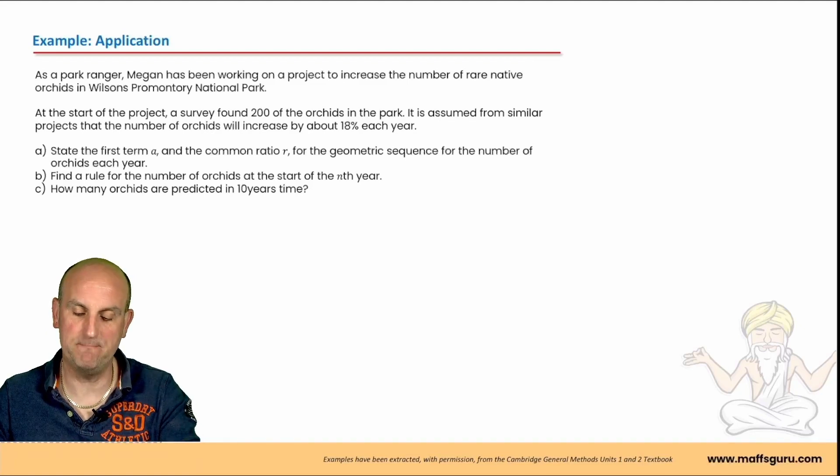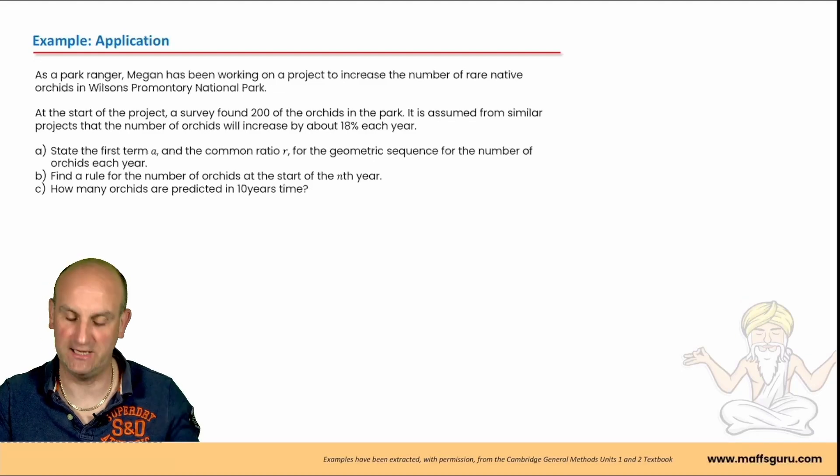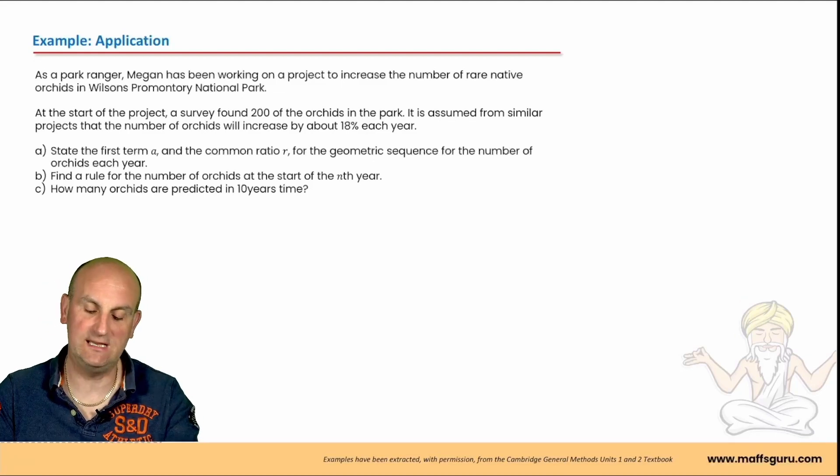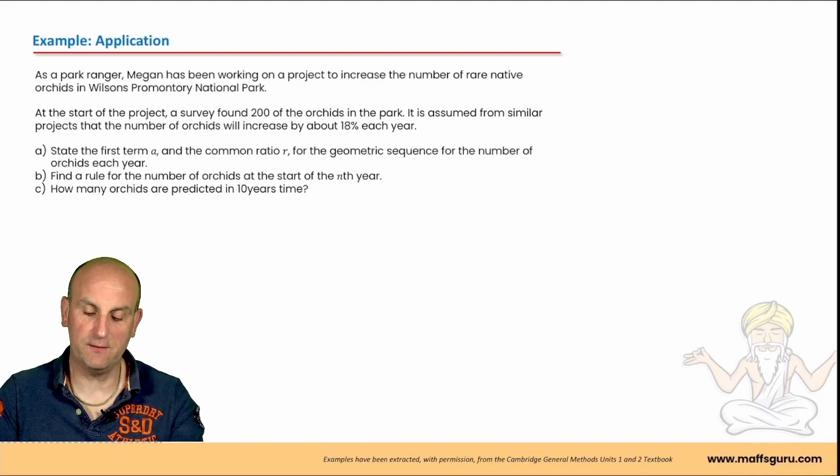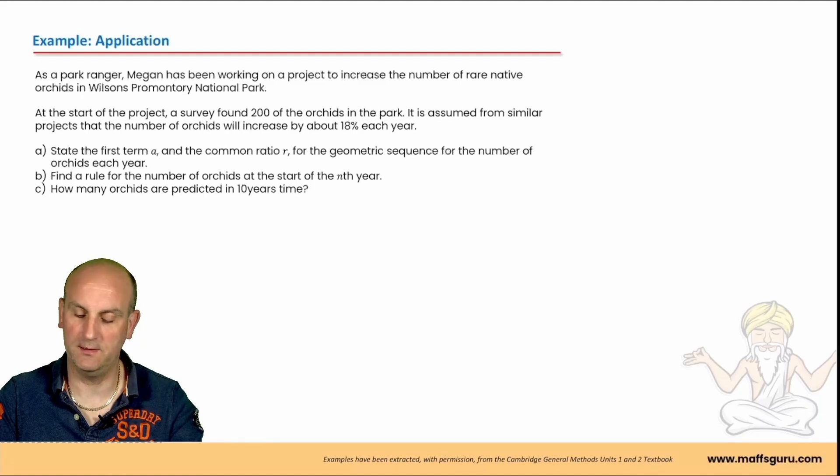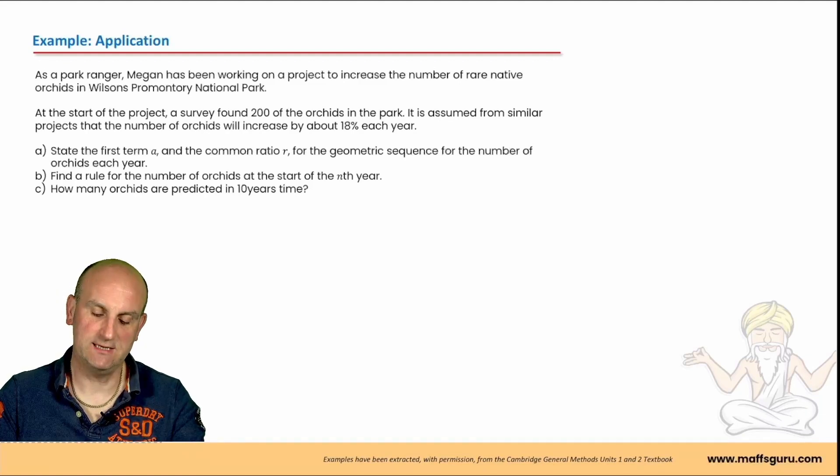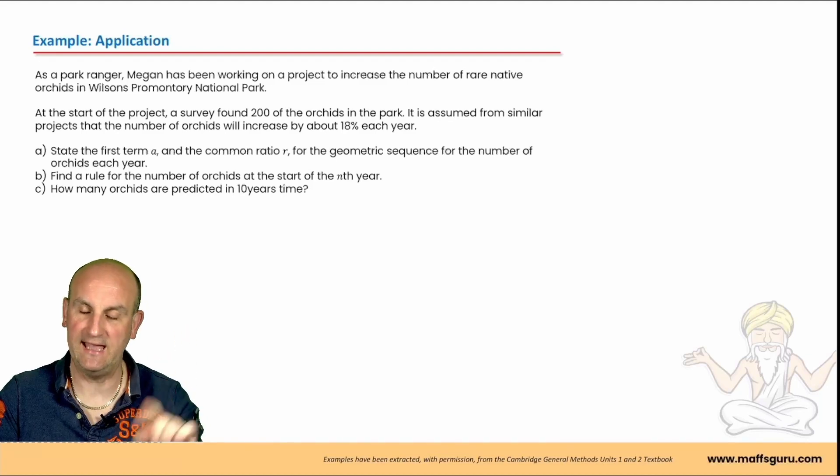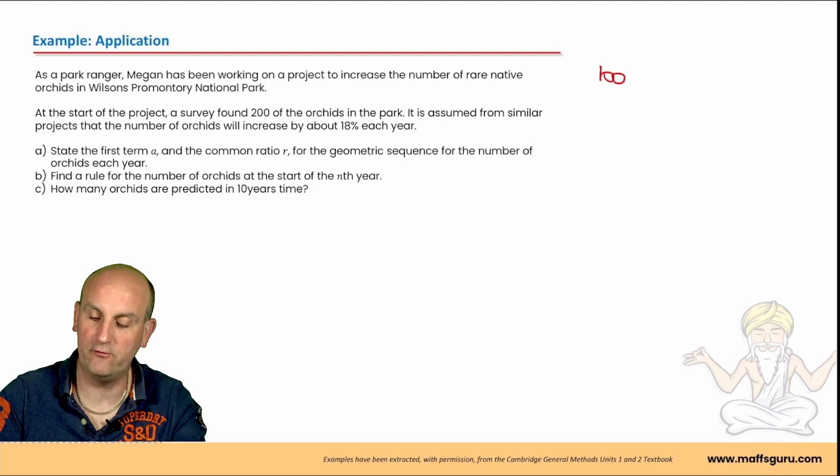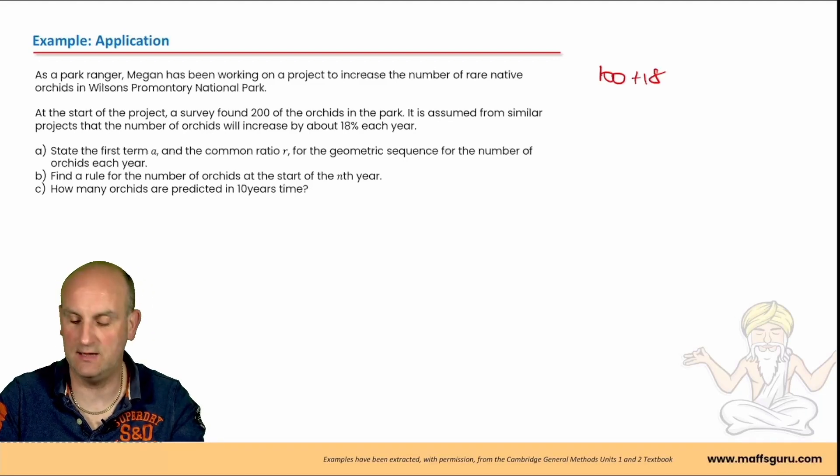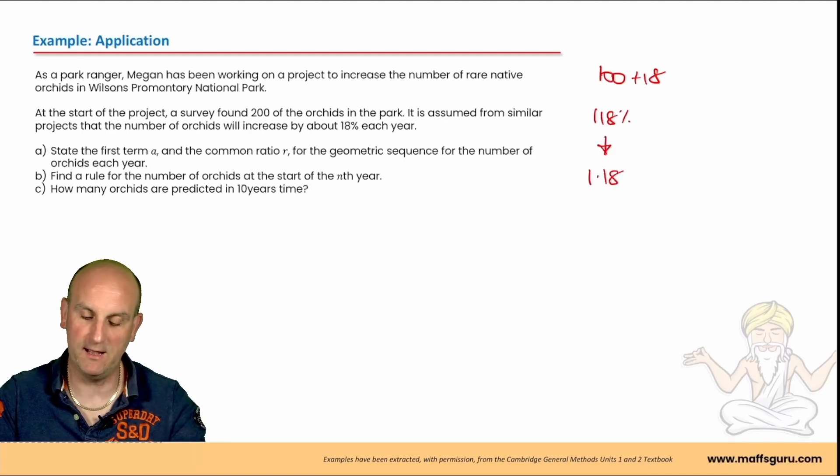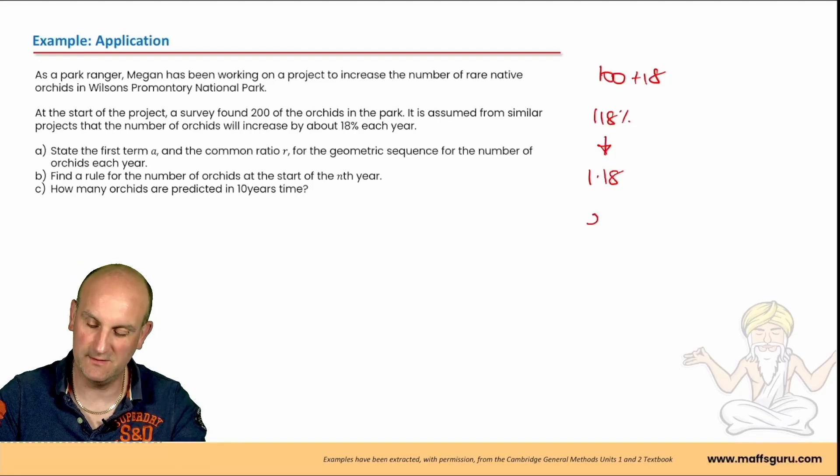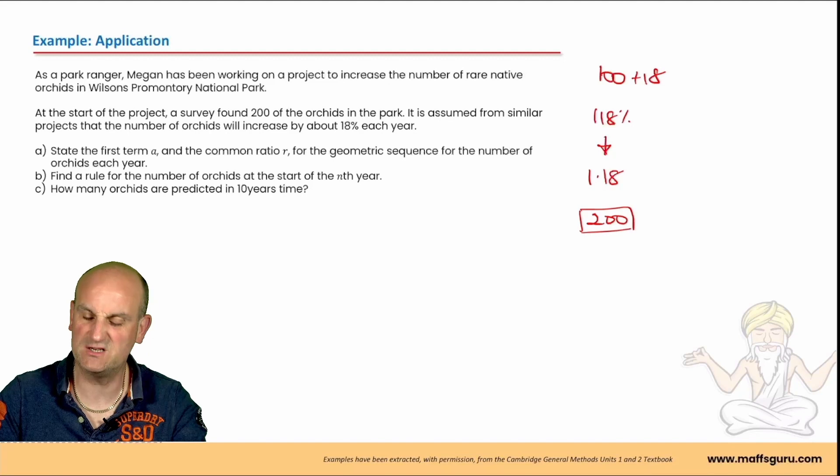As a park ranger, Megan has been working on a project to increase the number of rare native orchids in Wilson's Promontory National Park. I'm already bored. Flowers. No interest. At the start of the project, a survey found 200 of the orchids. Wonder what that number could be. It is assumed from similar projects that the number of orchids will increase by 18% each year. Well, the first thing I'm going to do here is 100 plus 18. I know that it's not asking me to do that, but trust me, I'm going to do it. 118%, which becomes a 1.18 multiplier. I know I'm going to use it, and I know my first term is going to be 200. Let's see what happens. Write this down. This is just my working out space.